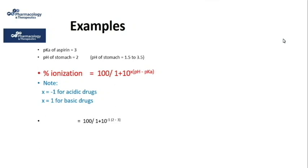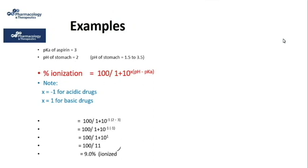Substituting the values: 100 / (1 + 10^(−1 × (2 − 3))) = 100 / (1 + 10^(−1 × −1)) = 100 / 11 ≈ 9%. So only 9% of aspirin will be ionized in the stomach, and the remaining 91% is the unionized fraction which can efficiently diffuse across the membrane.